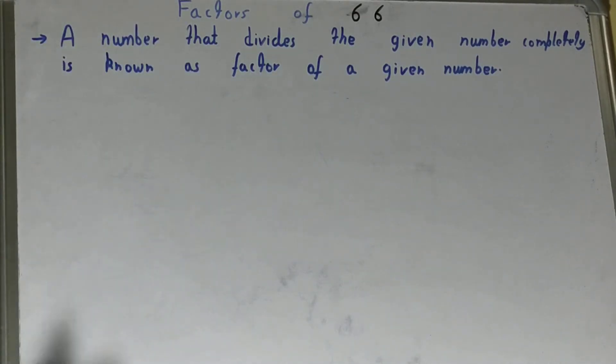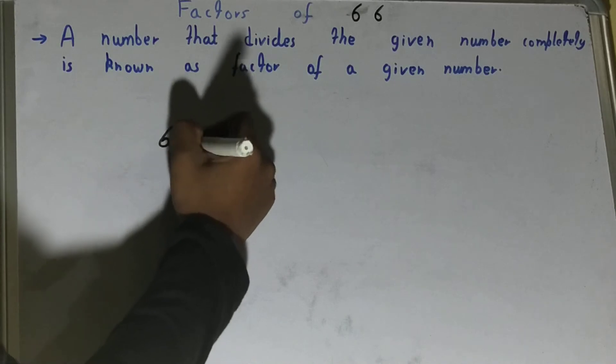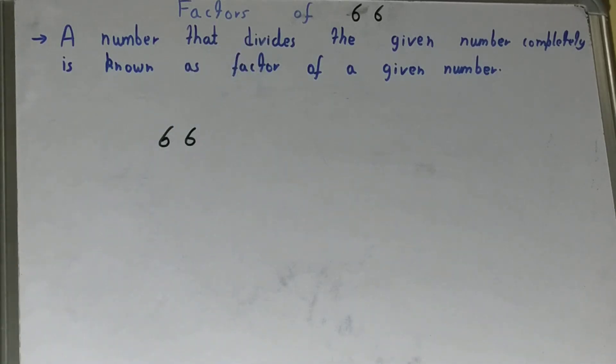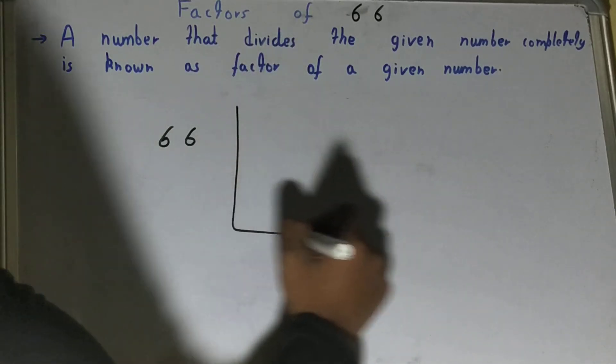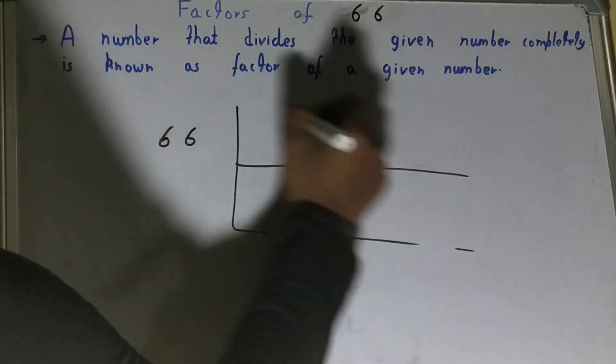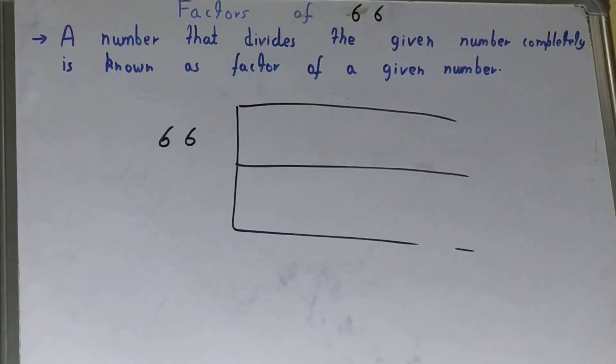Now let's come back to the main problem. What will be the factors of the number 66? We'll start with the lowest natural number, which is 1.